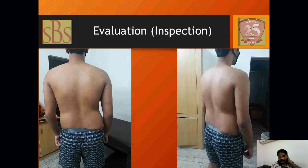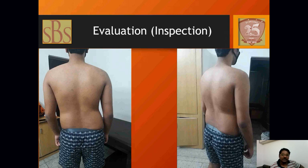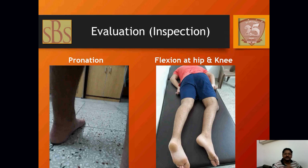Looking at the postural evaluation: the left side shoulder is deviated to one side and the right side hip joint or iliac bone is shifted to another side. The second diagram shows the spine deviating, and the patient has an elevated ilium with a depressed shoulder on the right side. We can also see pronation on the left side.